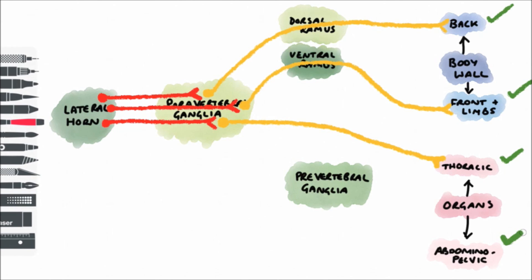Last, for abdominal pelvic organs, these are supplied by nerves which leave the lateral horn. They also go into the paravertebral ganglia, but they don't synapse there. Instead, they pass through and head to the prevertebral ganglia before synapsing, and then the postganglionic fibers head from there to the organs.